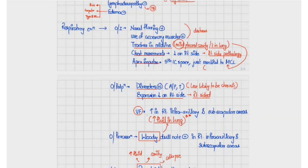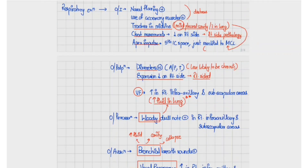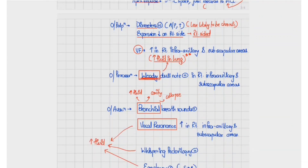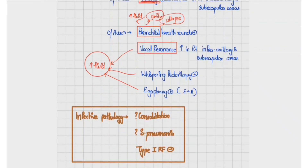Increased vocal fremitus in the right infraaxillary and subscapular areas suggests increased fluid in the lung in the right lower zone. A woody dull note on percussion is characteristic of consolidation. Bronchial breath sounds on auscultation can occur due to increased fluid collection or a cavity. Increased vocal resonance, whispering pectoriloquy, and egophony are all suggestive of increased fluid collection.